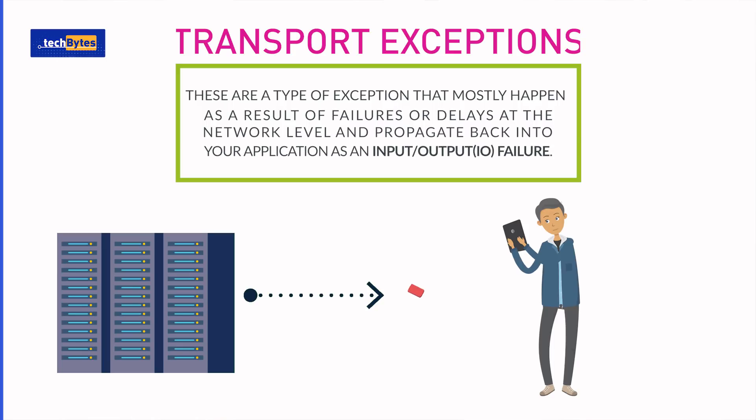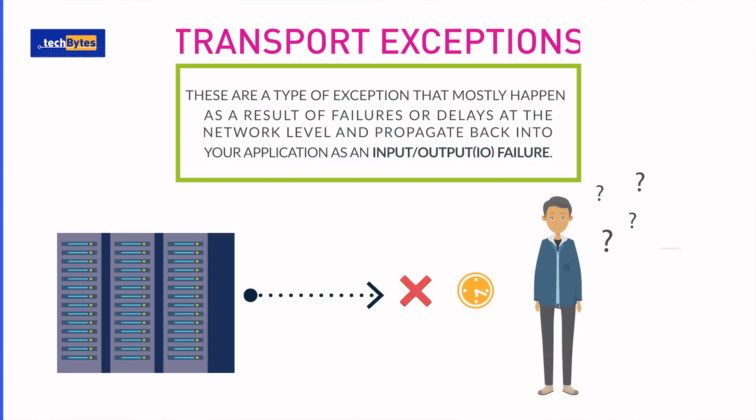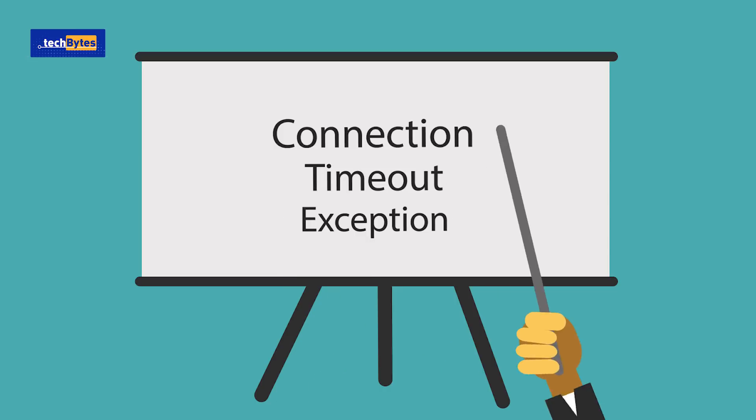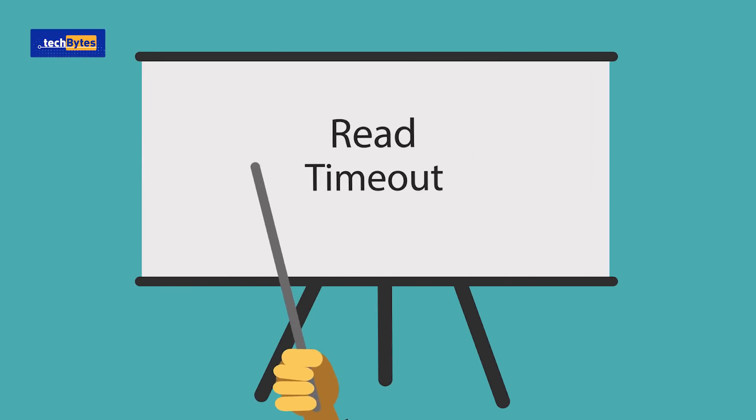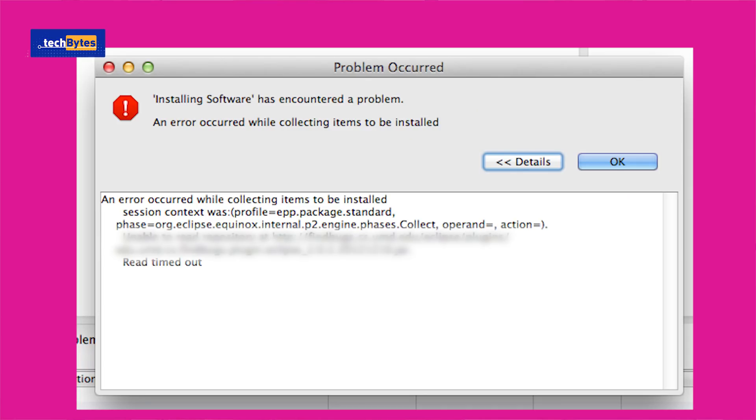A transport exception is a type of exception that mostly happens as a result of failures or delays at the network level, and these propagate back into your application and present as input-output exceptions or I/O failures. An example of a transport exception is a connection timeout exception. A network by its nature is unreliable, so sometimes your application may try to reach a server but it takes longer than is acceptable to connect. The maximum time allowed for an application to connect to the server is usually configured in the programming environment. Another example is a read timeout — similar to a connection timeout, but it happens when a connection has already been made to the server and an API call has been made, but it's taking longer than is acceptable to respond with data.